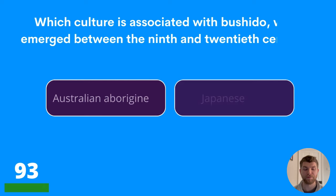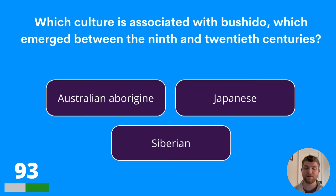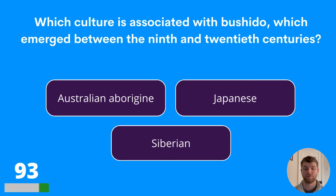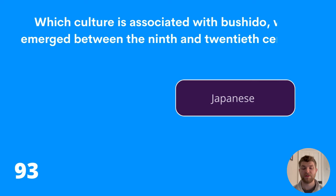Question ninety-three: which culture is associated with Bushido, which emerged between the 9th and 20th centuries? Australian Aborigine, Japanese, or Siberian? The answer is Japanese.